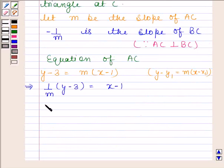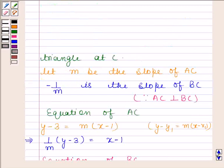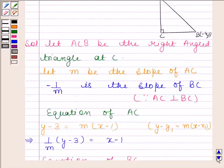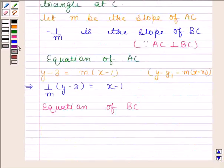Now we will find equation of BC. Line BC is passing through point (-4, 1) and having slope -1/m. So equation of BC is y - 1 = (-1/m)(x + 4).